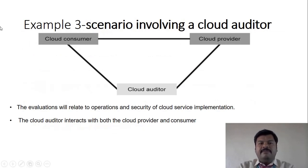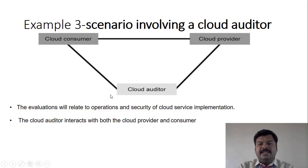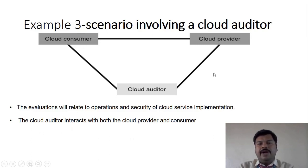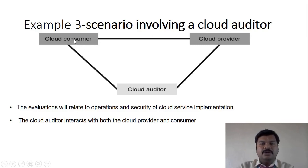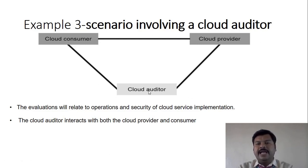In another example, the cloud consumer is directly connected to the cloud provider, and both are connected with the cloud auditor. The auditor's main role is auditing, testing, and tracing information. This evaluation relates to the operations and security of cloud service implementation. The cloud auditor interacts with both the consumer and provider, verifying that every service requested by the consumer is actually being delivered by the provider.